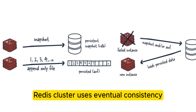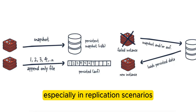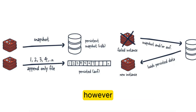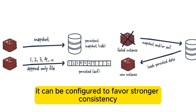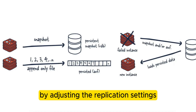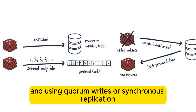Redis cluster uses eventual consistency, especially in replication scenarios. However, it can be configured to favor stronger consistency by adjusting the replication settings and using quorum writes or synchronous replication.